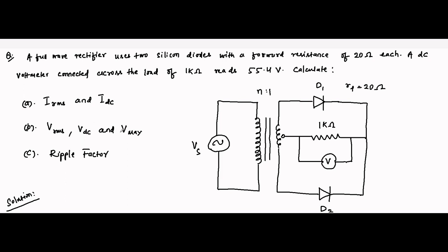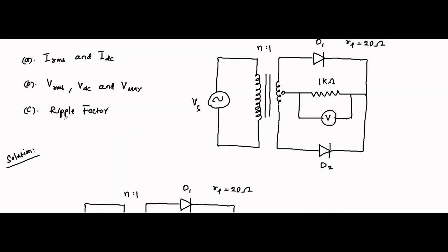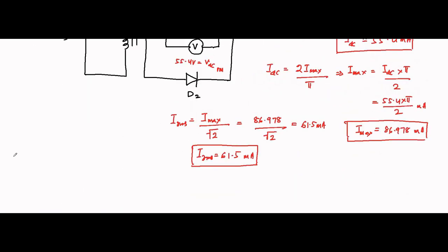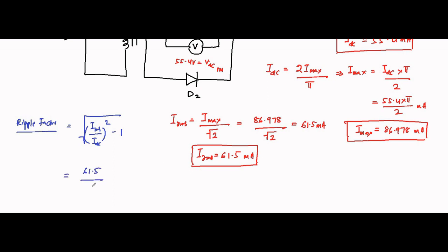Next are V_RMS, V_DC, and V_max. First, let us determine the ripple factor, since we already have the RMS and DC values. The ripple factor formula is: root over of (I_RMS divided by I_DC) squared minus 1. Here I_RMS is 61.5 milliampere and I_DC is 55.4 milliampere, giving a ripple factor of approximately 0.482.